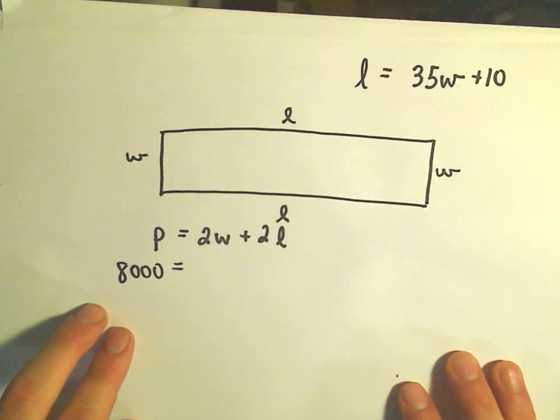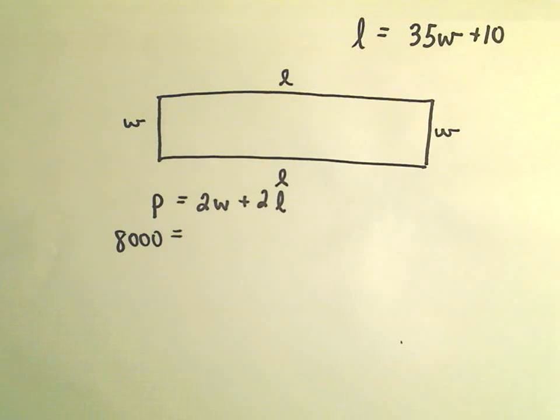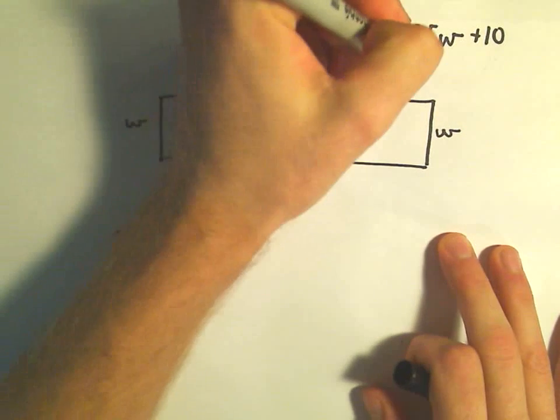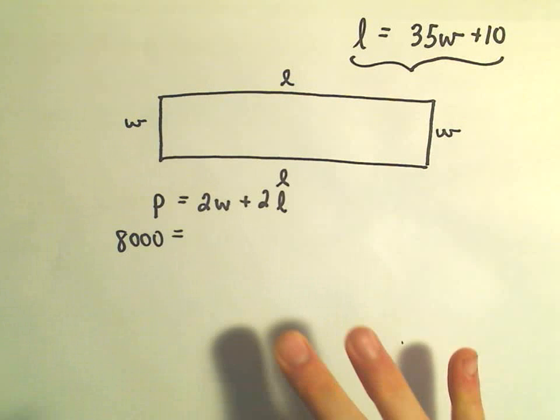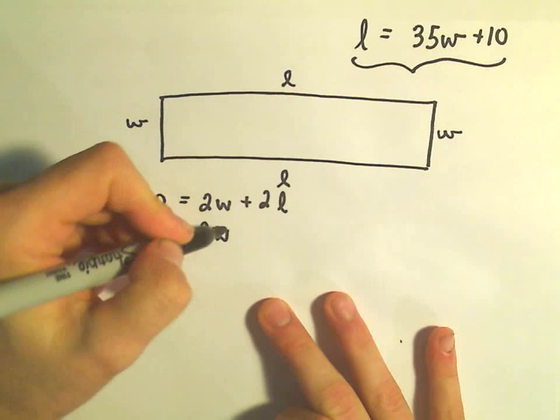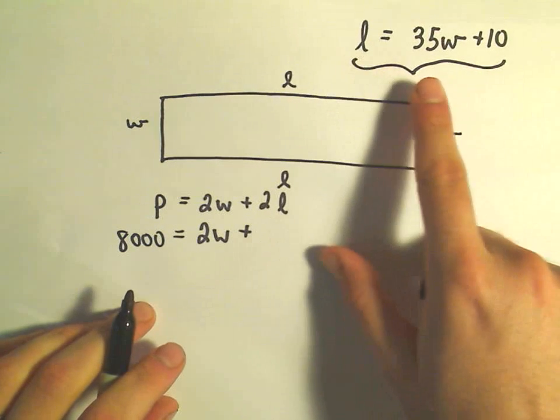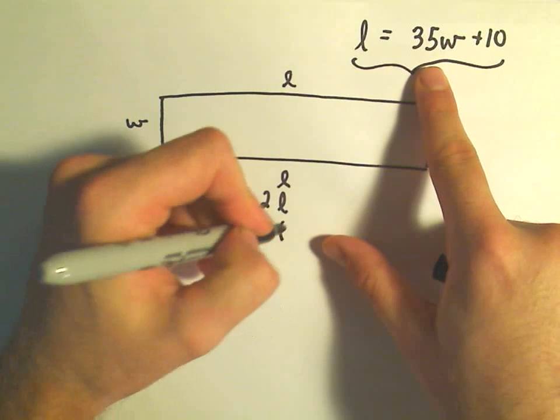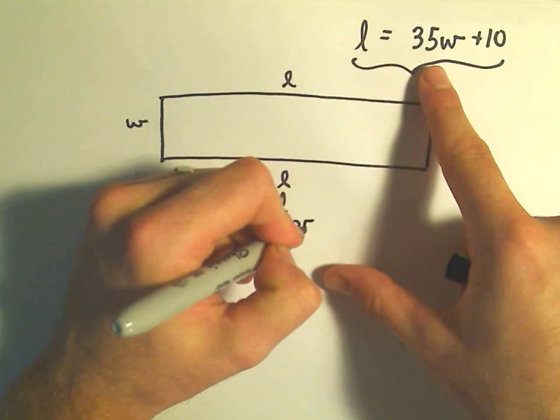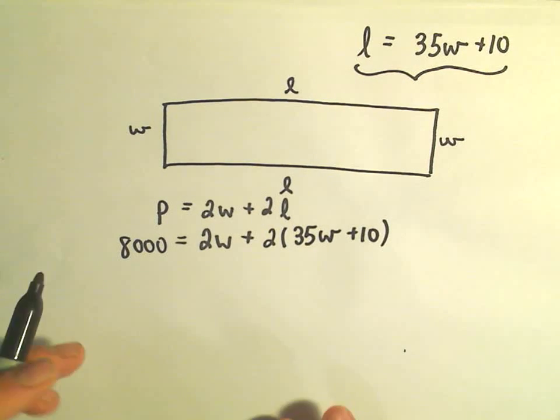So hopefully, think about this. This is the part, this is the tricky part, or at least one of the tricky parts. But once we come up with that, I can now utilize that fact. So we've got 2W plus, well, 2 times L. But L is the same thing as 35W plus 10. And now this is going to give us a nice little linear equation that we can solve.